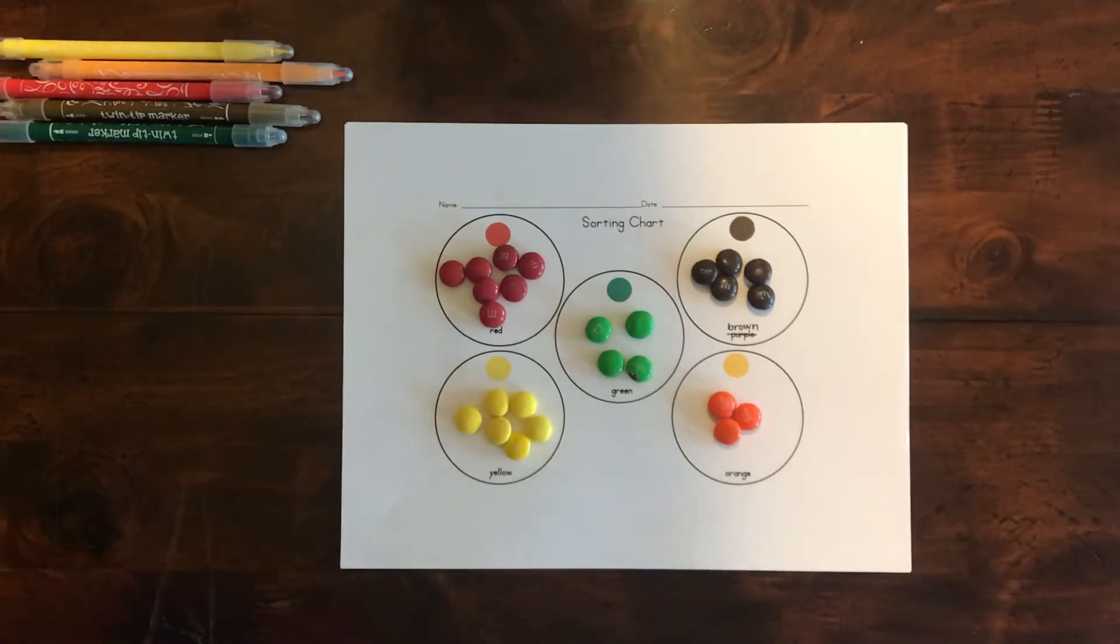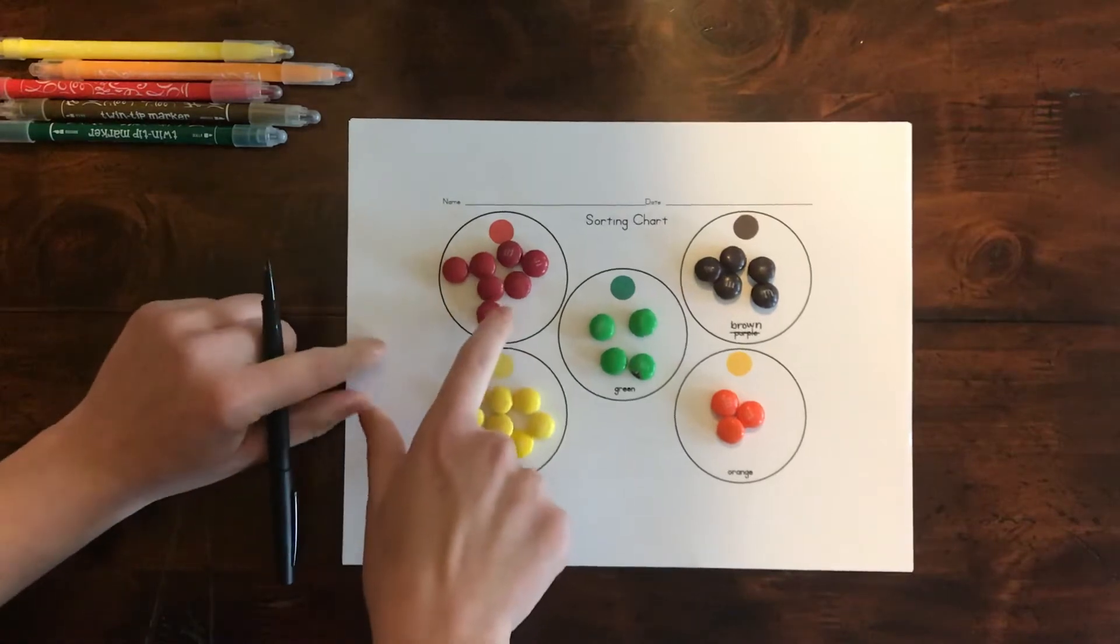So now that we have it sorted, you're going to take a pencil or a pen on your chart and we're going to count how many of each one we have. So let's count the reds.